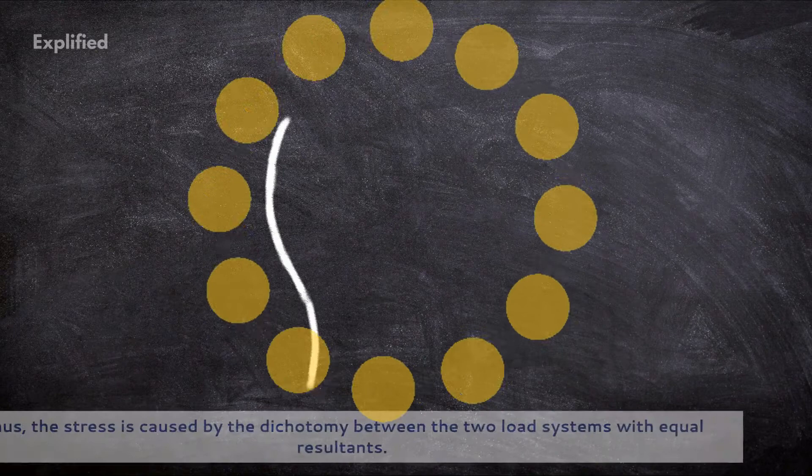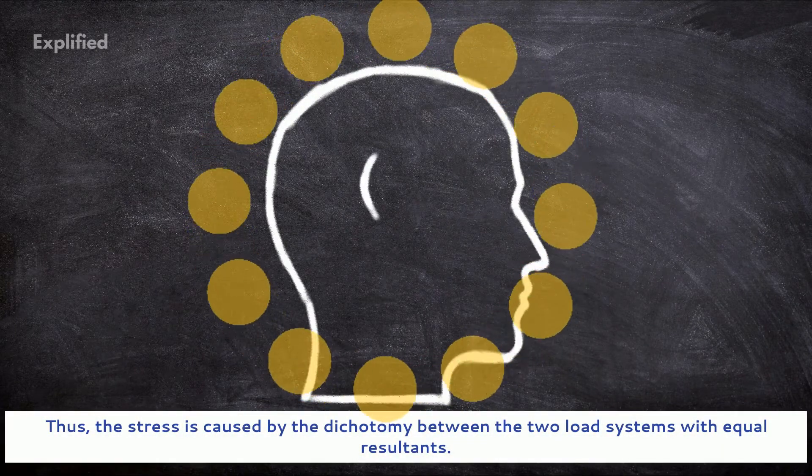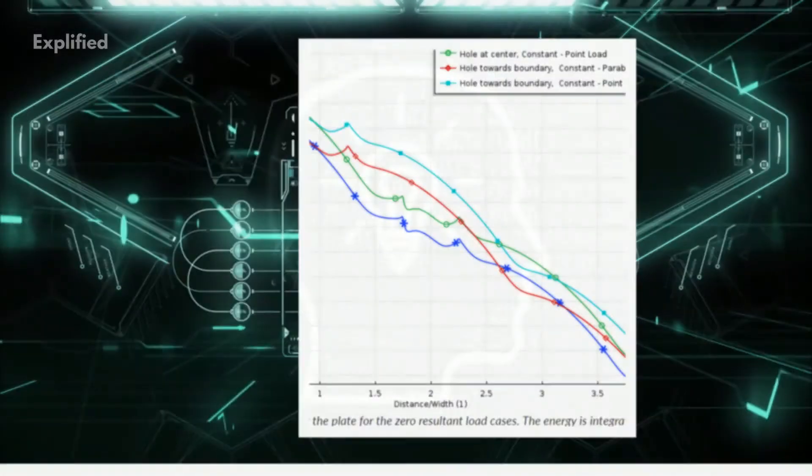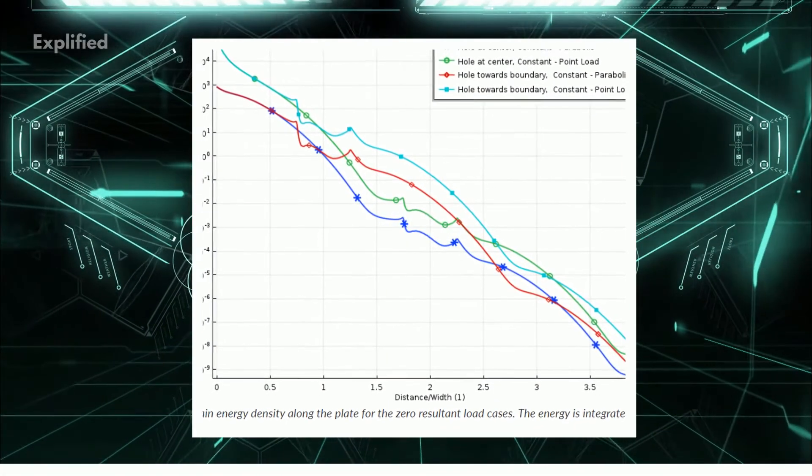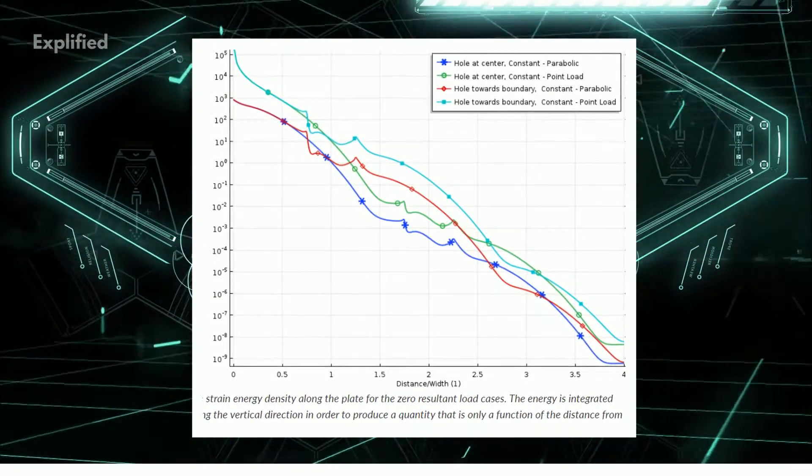Thus, the stress is caused by the dichotomy between the two load systems with equal resultants. Almost every modern proof is based on the estimates of the decay of the strain energy density for such a zero resultant system.